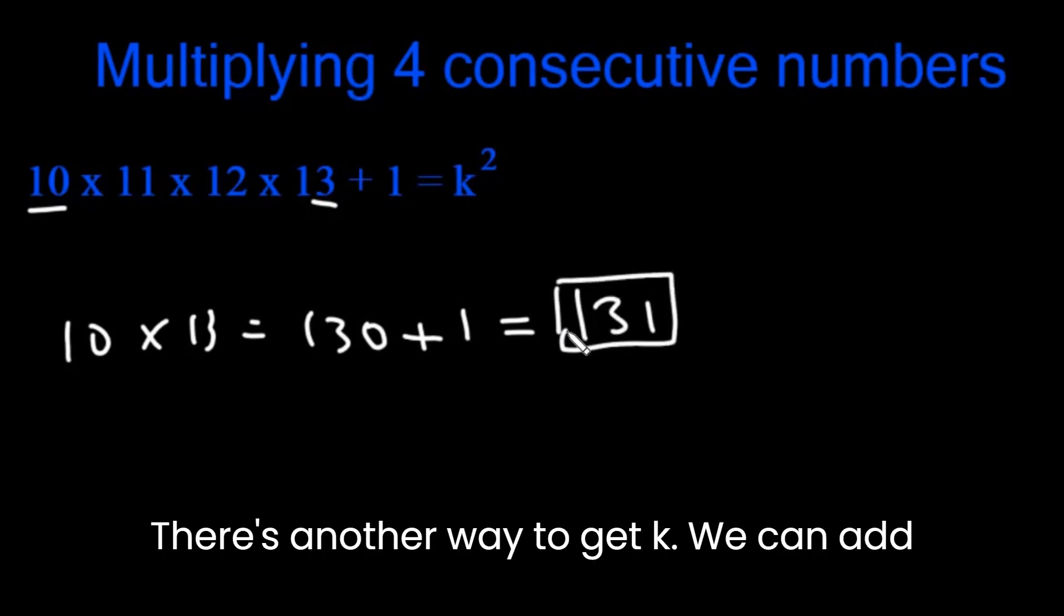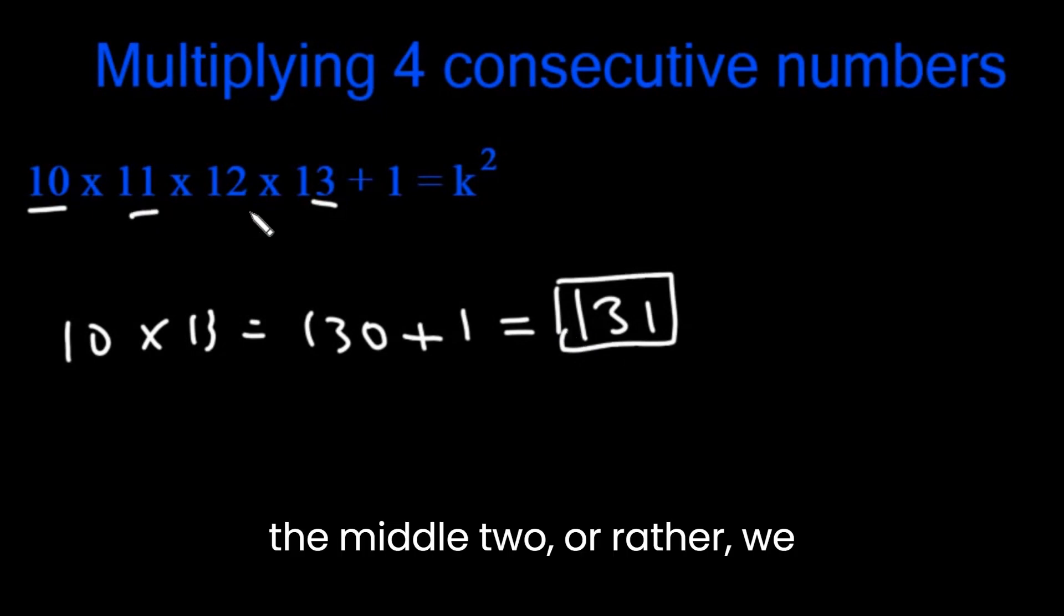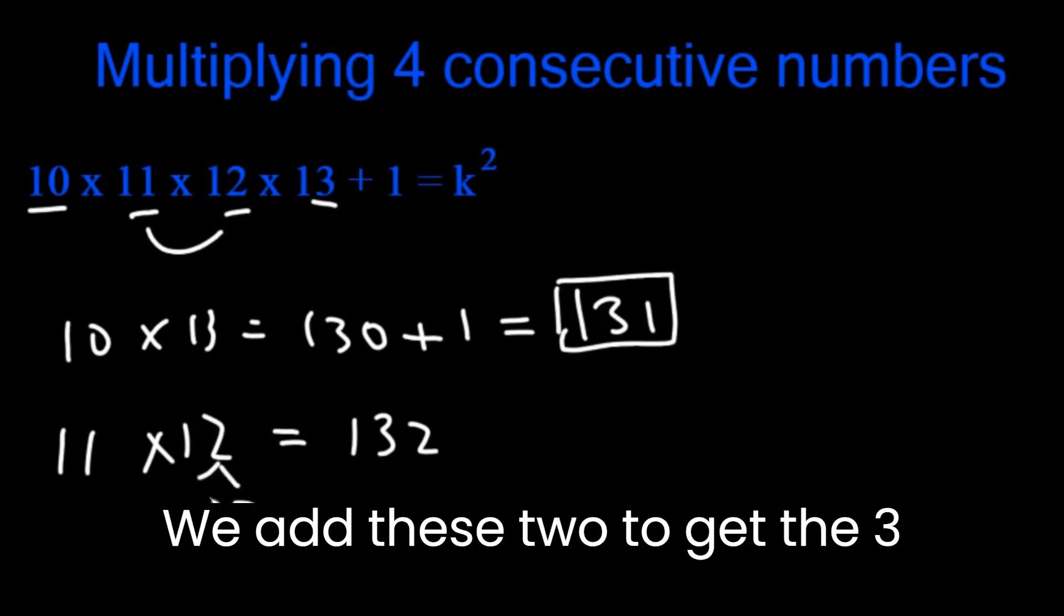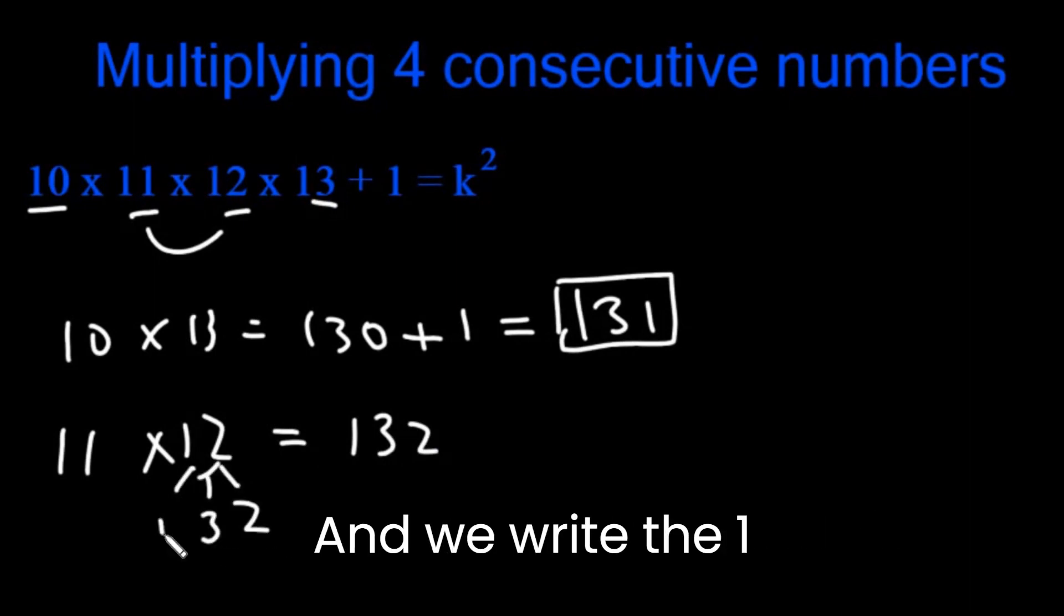There's another way to get k. We can multiply the middle two. 11 times 12 is 132 because of the 11 trick. We write the 2, we add these two, that's 3, and we write the 1.